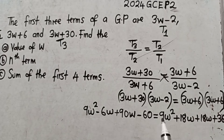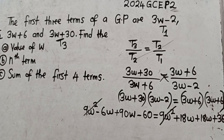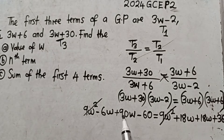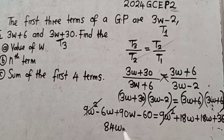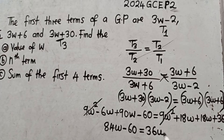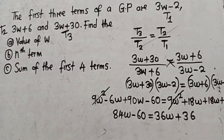The 9w squared terms cancel from both sides. We then collect the w terms: negative 6w plus 90w gives 84w, and we subtract 60, giving 84w minus 60 on the left side. On the right side, 18w plus 18w gives 36w plus 36.